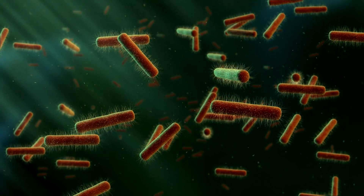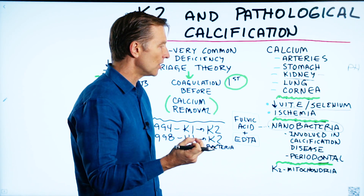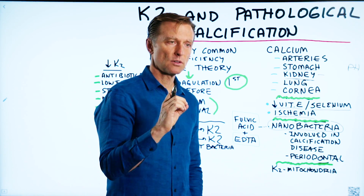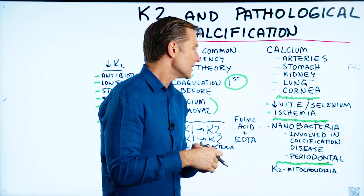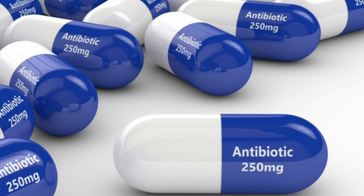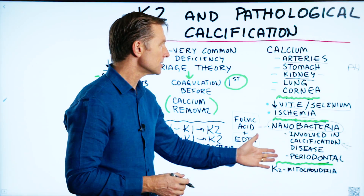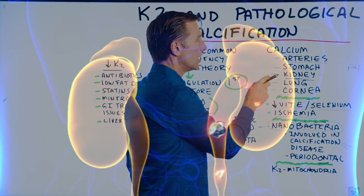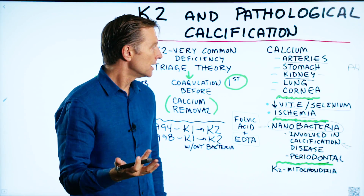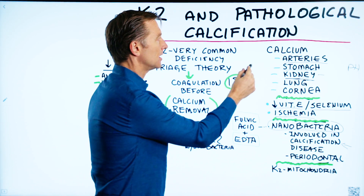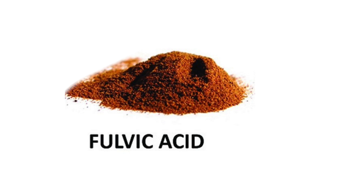Then you have nanobacteria, which is the smallest known bacteria. These little microbes hide in little calcium shells or little igloos to protect themselves as a survival mechanism — almost impossible to kill with antibiotics. They're involved in so many diseases that have calcification connected to it, like periodontal disease, calcification in the arteries, kidney stones, and sometimes gallstones.